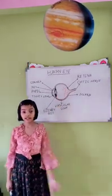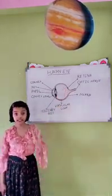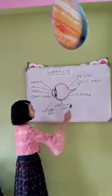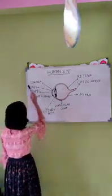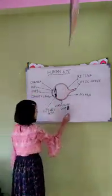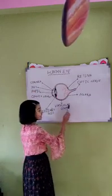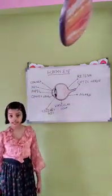The outer part again can be divided into three types. They are sclera, cornea and vascular coat. Vascular coat is also known as vascular layer.